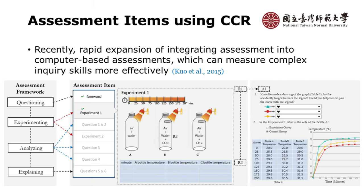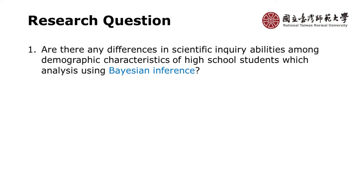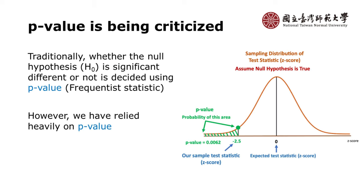We tried to build assessment items for scientific inquiry, covering questioning, experimenting, analyzing, and explaining — using the older flow of scientific inquiry in our assessment. Normally, if we have this kind of assessment and need to decide whether male is better than female, or city is better than country, we use p-value, which stands for probability value.